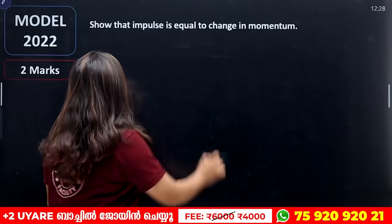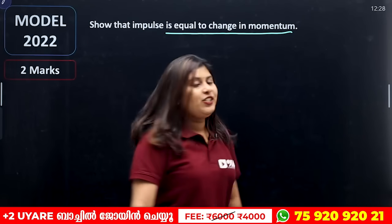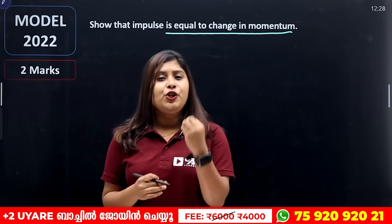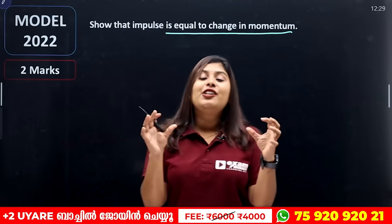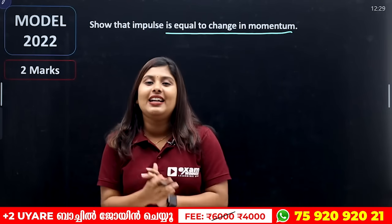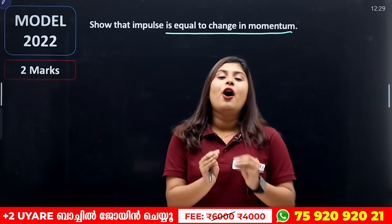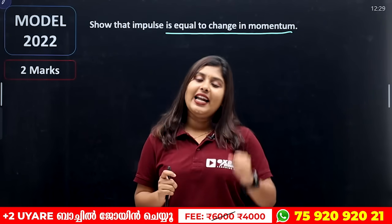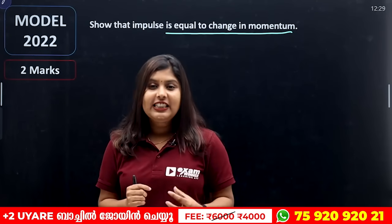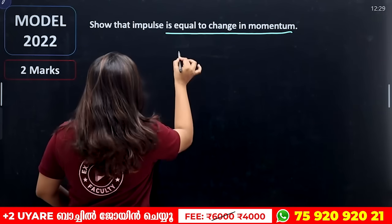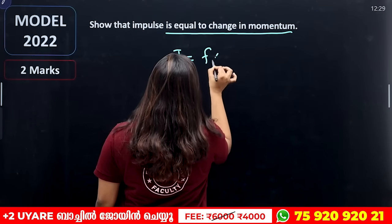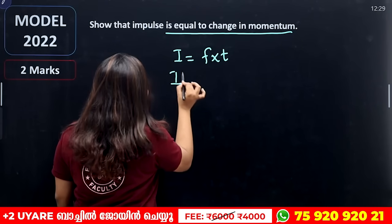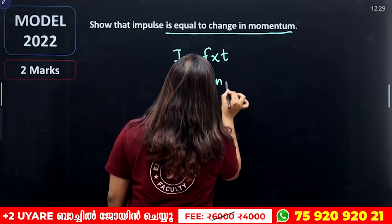Now let's study: show that impulse is equal to change in momentum. What do we call impulse? In a short time, a large force is applied — for example, in a tennis stroke or a penalty kick. We denote impulse as F·dt.